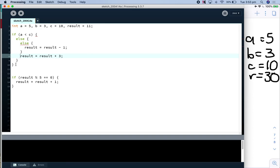We exit this else, we exit this if, we've gone down. So if result modulo 5 is zero. So our result is 30. 30 modulo 5 is zero, so this condition is true. What we're doing is result is equal to result plus one.